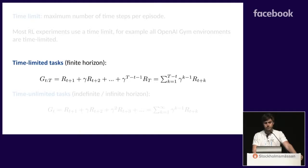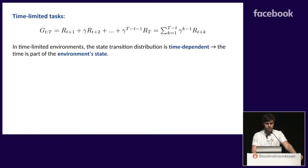So first, let's focus on time-limited tasks. Here, time limits apply naturally, because you have a fixed number of time steps to interact with your environment and maximize your return. So in time-limited environments, the state transition distribution is time dependent, because your environment has to terminate after T time steps. So it means that your state transition distribution has a notion of time. So your MDP has time in the state.